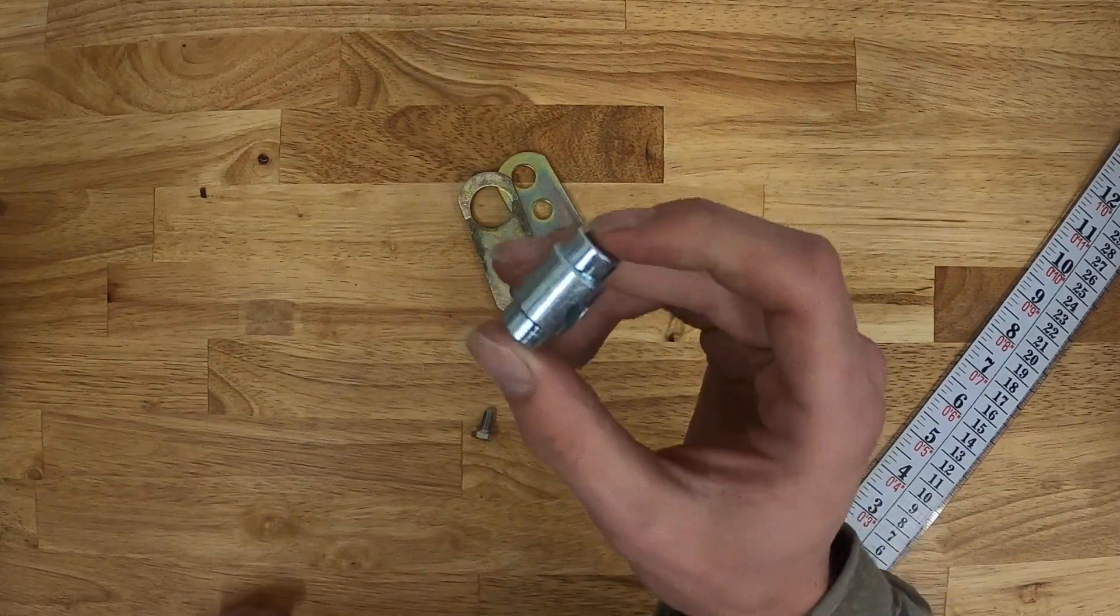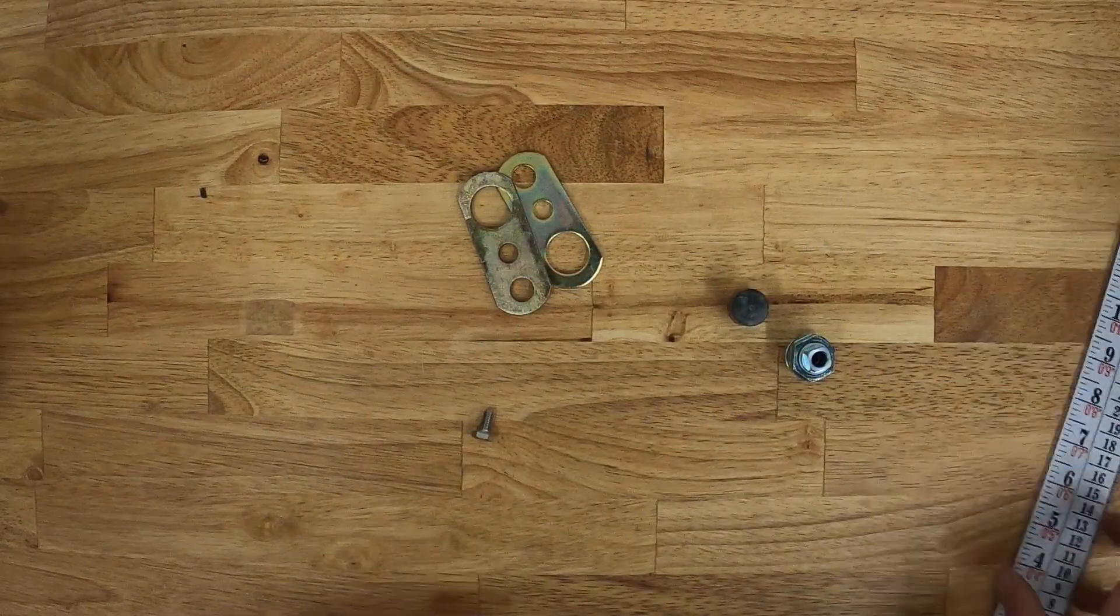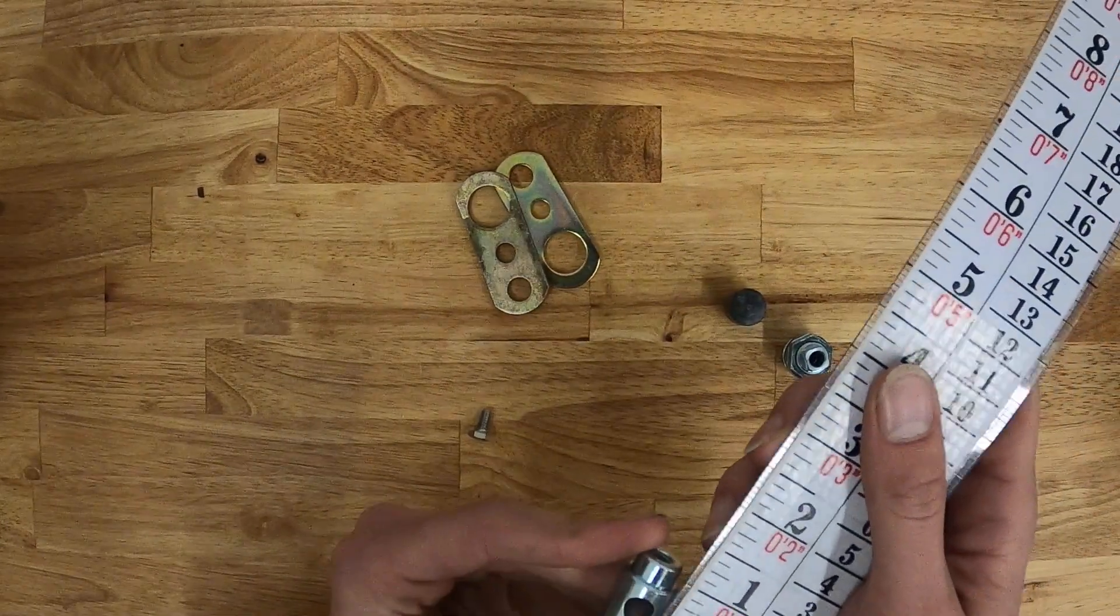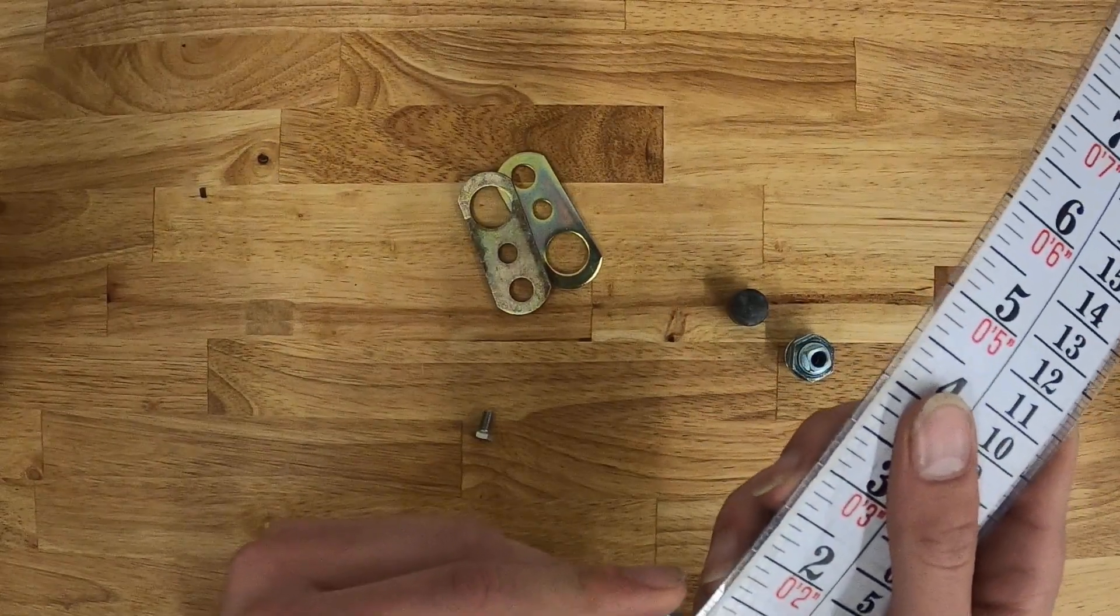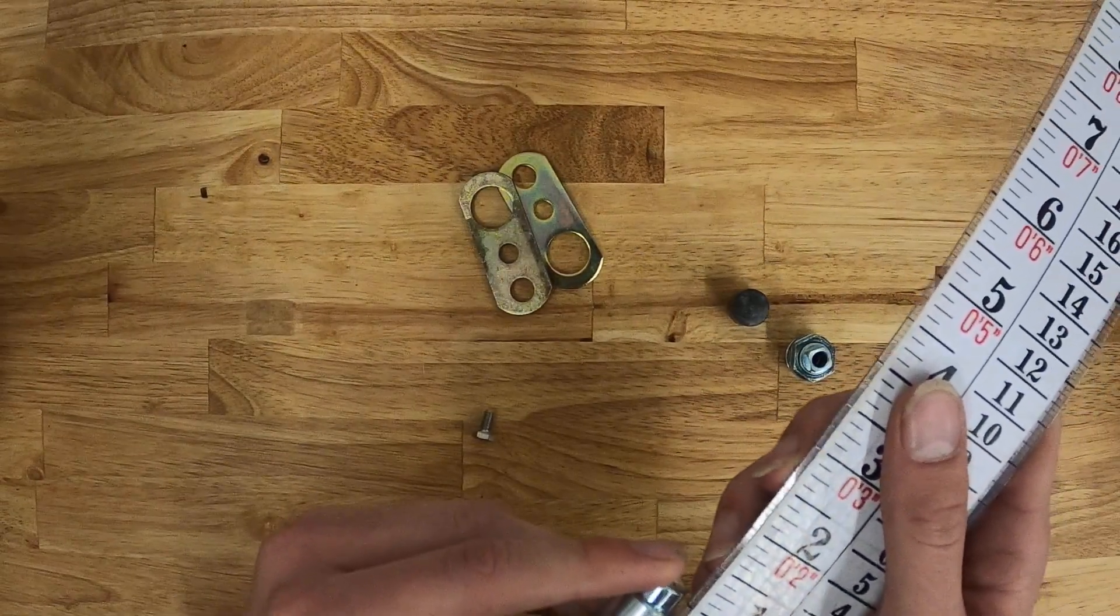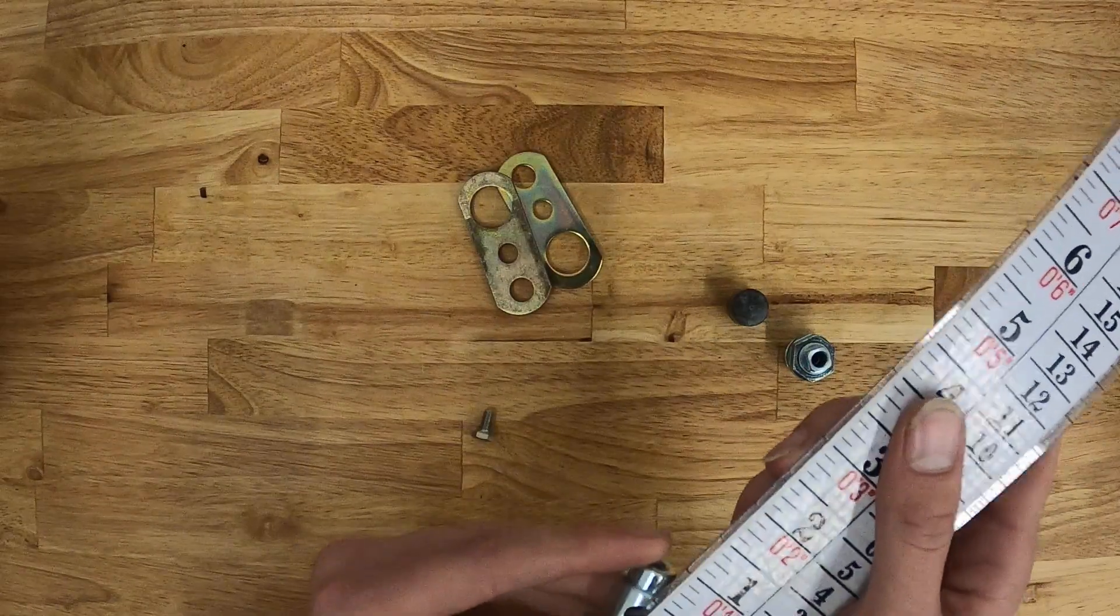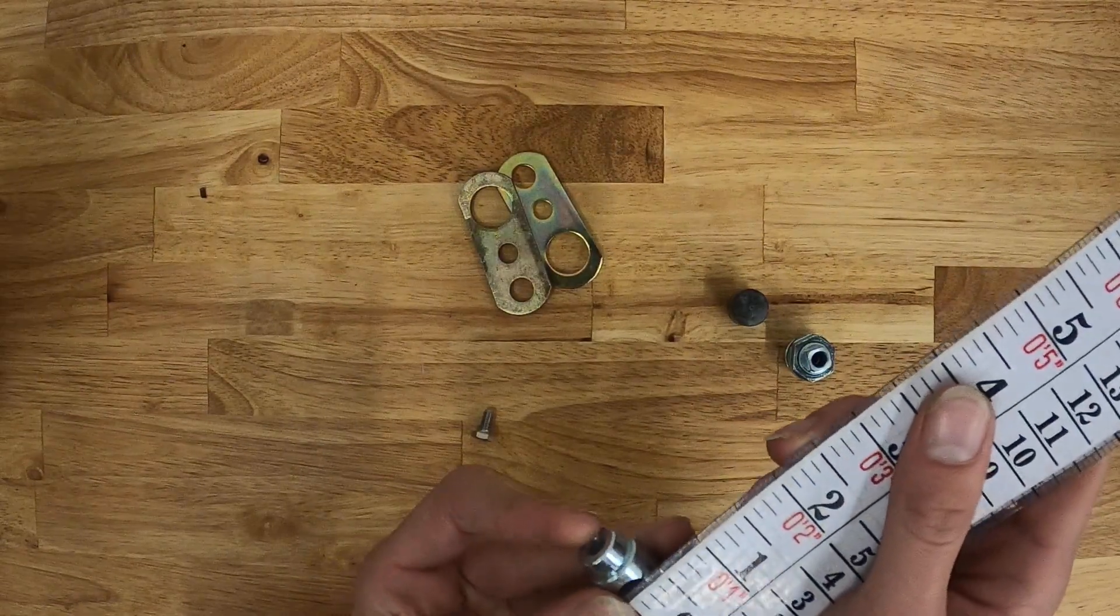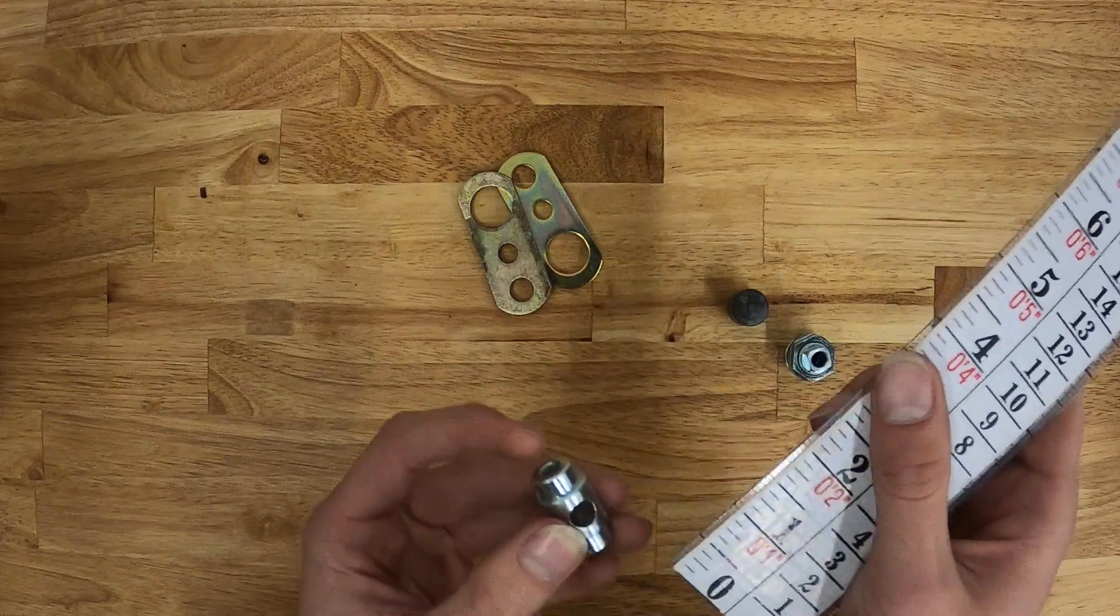And then we can also measure the pivot connector. That'll measure the pivot connector. That'll have the total length of right about just above an inch. And then in diameter of that hole there, right there in the center. It's right at about a quarter of an inch.